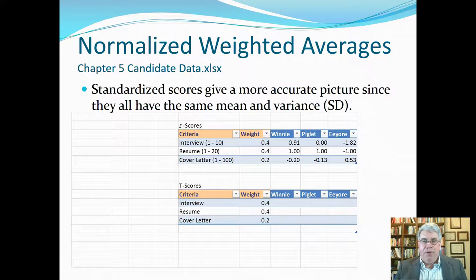Now, if we were to take a weighted average of these, there's so much more variability in the cover letter that it would dominate the weightings, even if we wanted it to be very small. So, what we need to do is, instead of using the raw scores, we need to use standardized scores. We need to use Z-scores, or some other form of standardized scores, to give us a more accurate picture, since they will all have the same mean and variance. With the Z-scores, the mean would all be 0, and the standard deviation would be 1. With T-scores, the mean would be 50, and the standard deviation would be 10.